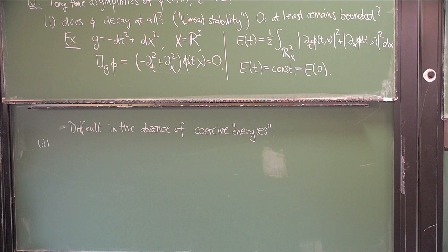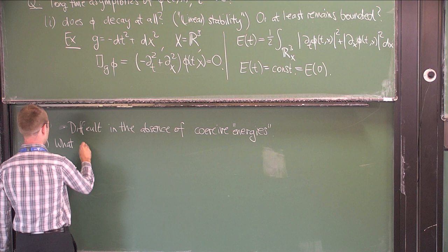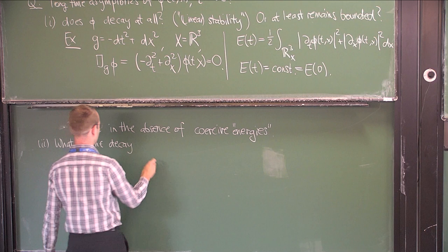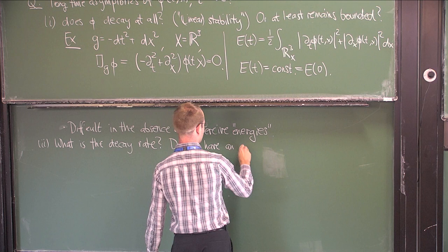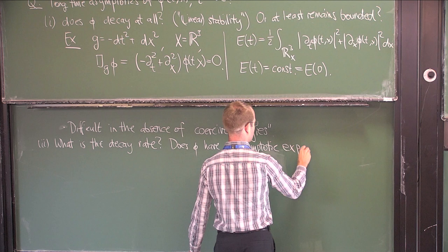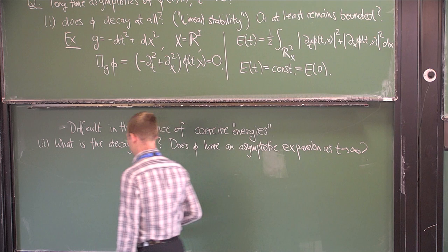That's a qualitative question, and then if you have decay or boundedness or whatever, you can also ask about more quantitative information about the long-time behavior. Perhaps if it decays, what is the decay rate? Exponential or inverse polynomial? And a related question: does φ have an asymptotic expansion as t goes to infinity?